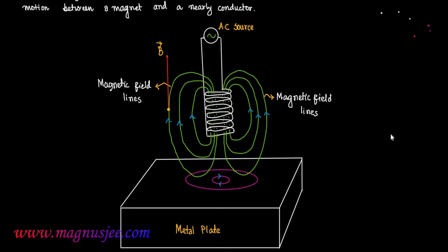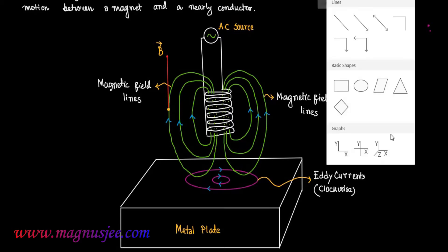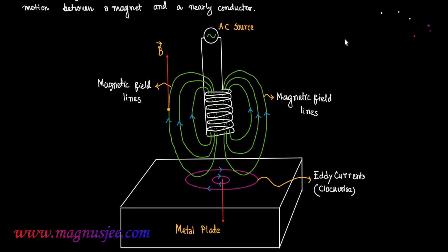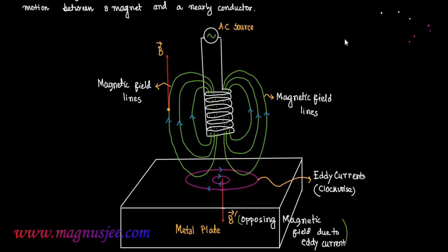This magnetic field induction vector B is produced due to the alternating current flowing through the coil from the AC source. And this is the direction along which eddy currents flow in the metal plate which is placed below the coil. These eddy currents flow clockwise in the horizontal metal plate.